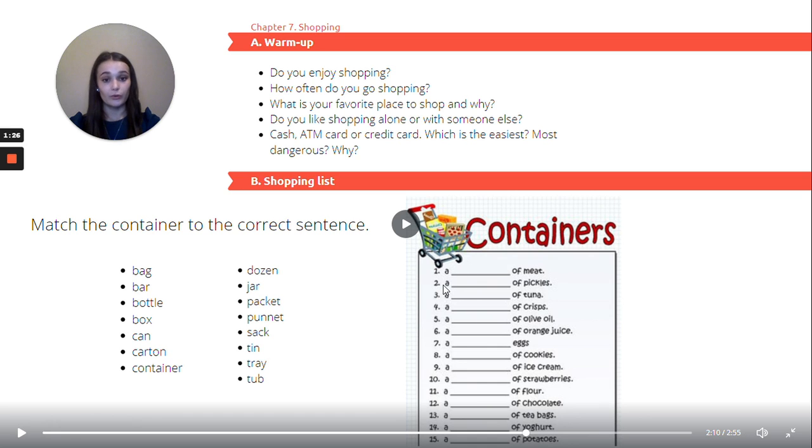Sentence number two. A of pickles. Have a look. A jar of pickles. Sentence number three. A of tuna. Put it down and look and that would be a can of tuna.